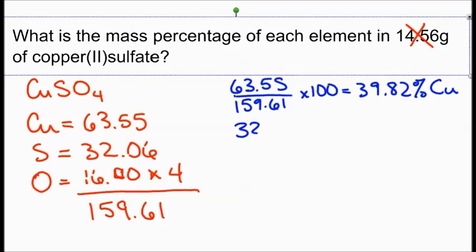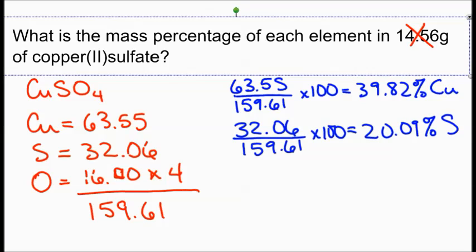Doing the same thing with sulfur, 32.06 divided by 159.61 times 100% will give us 20.09 percent sulfur.